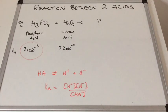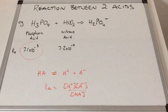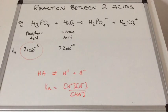The nitrous acid has to act as a base and receive the proton. So if the phosphoric acid is going to donate a proton, it will become H₂PO₄ with a 1 minus charge. And the nitrous acid has to accept that proton, so it becomes H₂NO₂ with a 1 plus charge.